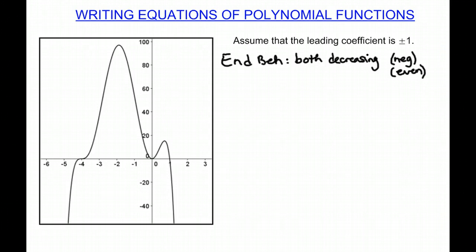Now we can assume that the leading coefficient is positive or negative 1. So we know that the leading coefficient will be negative 1. So now we have to look at our zeros.